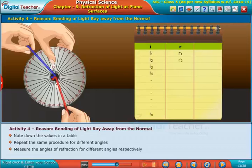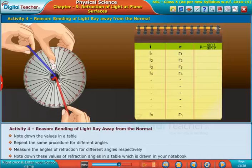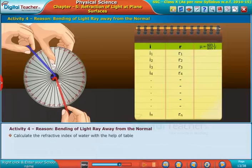Note down these values of refraction angles in a table which is drawn in your notebook. Calculate the refractive index of water with the help of table. Do not perform this activity with angle of incidence greater than 48 degrees.